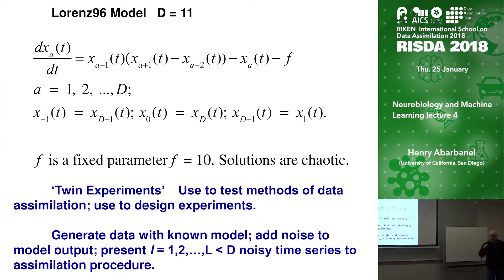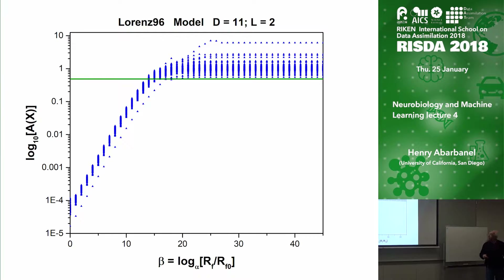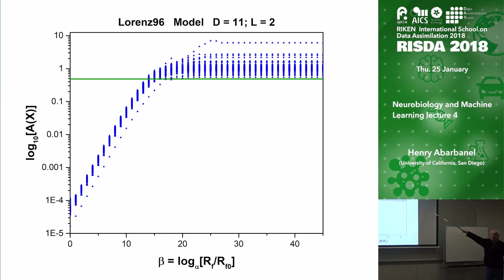Here's the Lorenz 96 model — again we do twin experiments. This is an 11-dimensional model and the calculations were done by Sasha Sherman. Suppose you take the 11-dimensional model and make two measurements: many action levels become independent of model accuracy, but no action level is significantly smaller than any other — there are lots of minima all close together. As Laplace would say, you have to sum up the contributions of all these probability maxima or action minima.